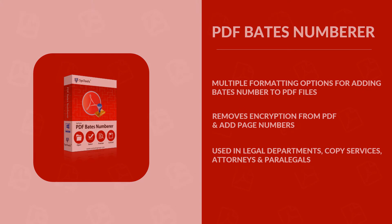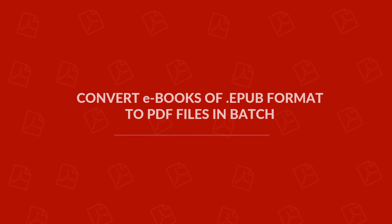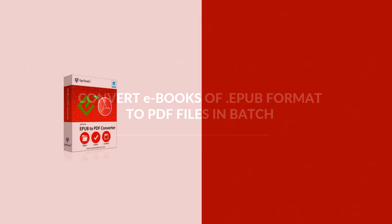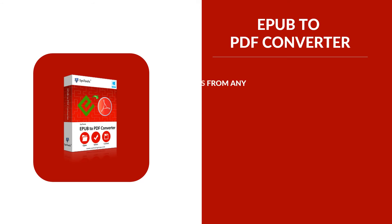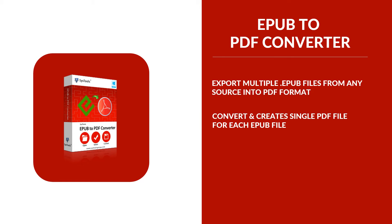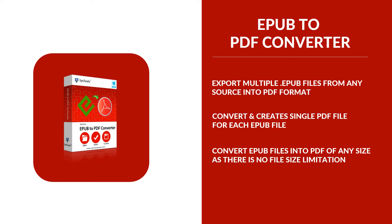To convert ebooks of EPUB format to PDF files in batch, there is the EPUB to PDF Converter software. The tool lets you export multiple EPUB files from any source into PDF format, and lets you convert and create a single PDF file for each EPUB file. You can convert EPUB files into PDF of any size, as there is no file size limitation.